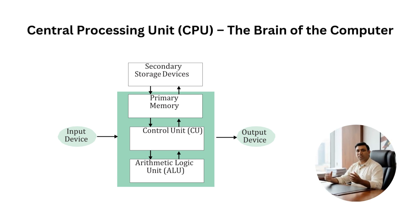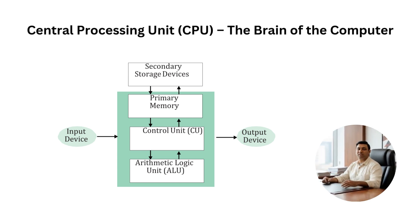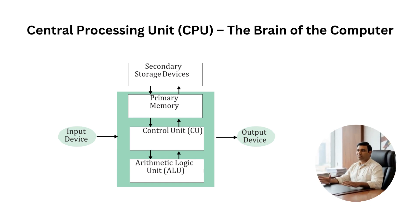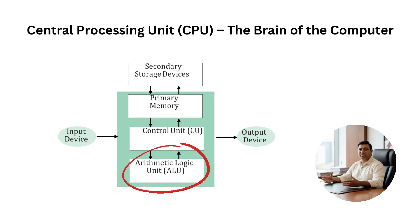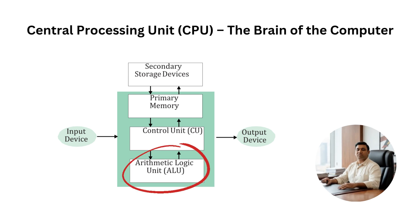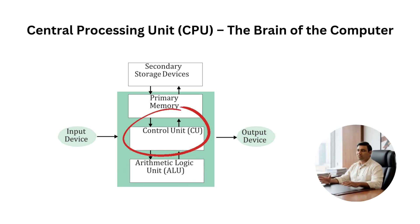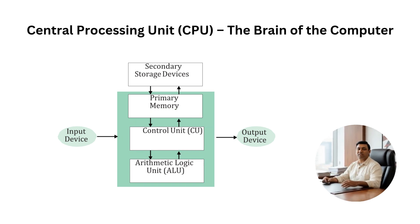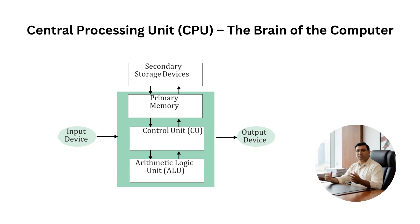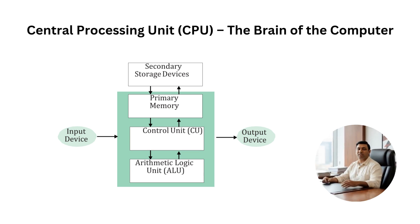Think of it like a human body — hardware is the body, while software is the brain that gives instructions. Together, they make a complete system. The CPU, or central processing unit, is often called the brain of the computer. It has two major components: the arithmetic logic unit, which performs all mathematical and logical operations, and the control unit, which directs how data flows between memory, input, and output. Inside the CPU, there are also registers — small storage units that temporarily hold data and instructions. Without the CPU, no processing can happen.